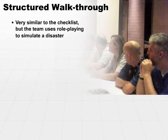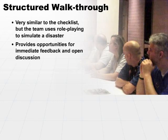Normally, this will occur around a conference room table. You pull everybody in, everybody sits down, they look at the plan, and then you have someone be the reporter to tell what type of disaster has occurred. This provides opportunities for immediate feedback from many different functional areas and an open discussion.